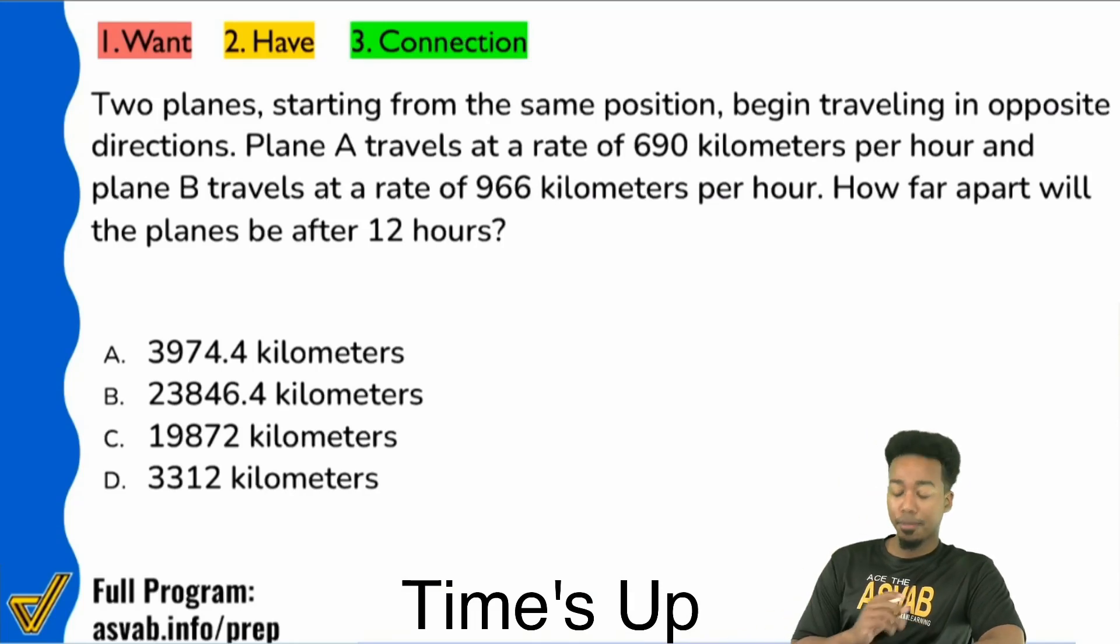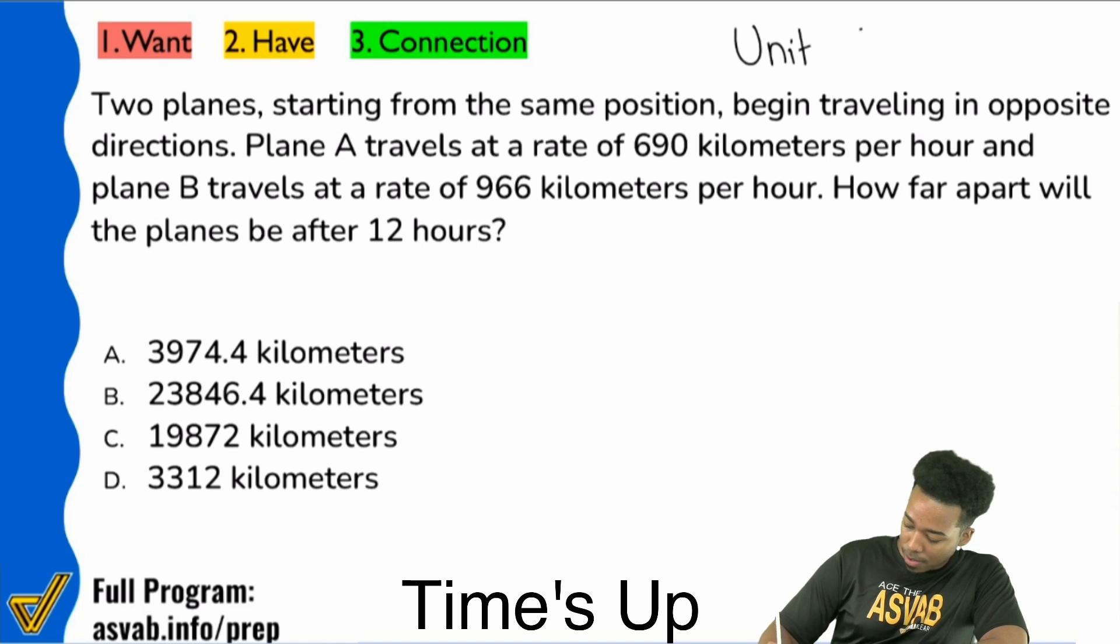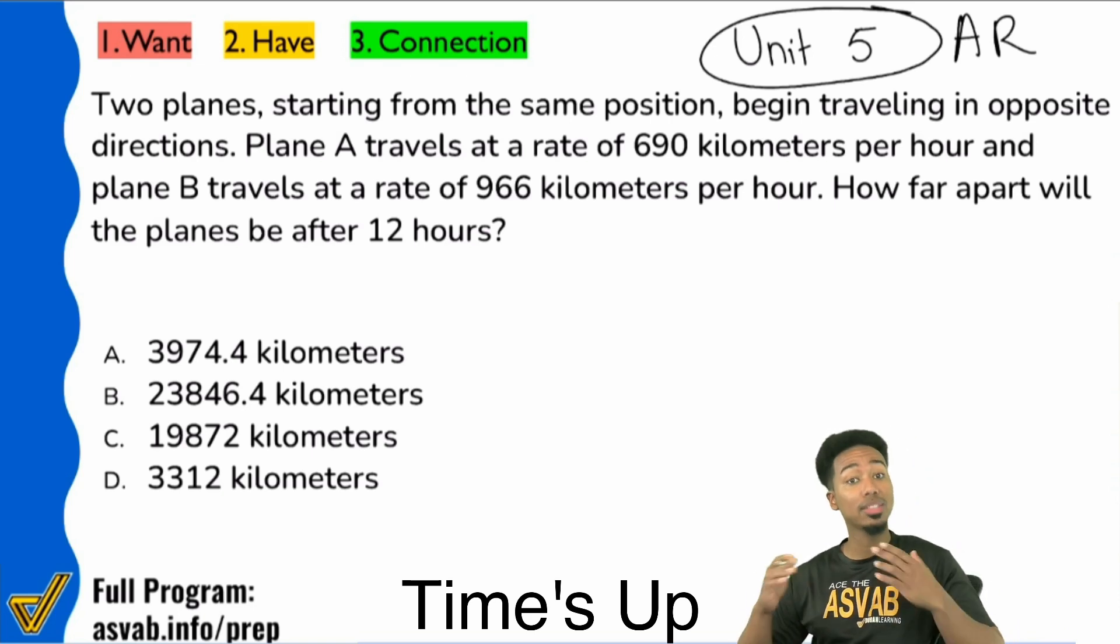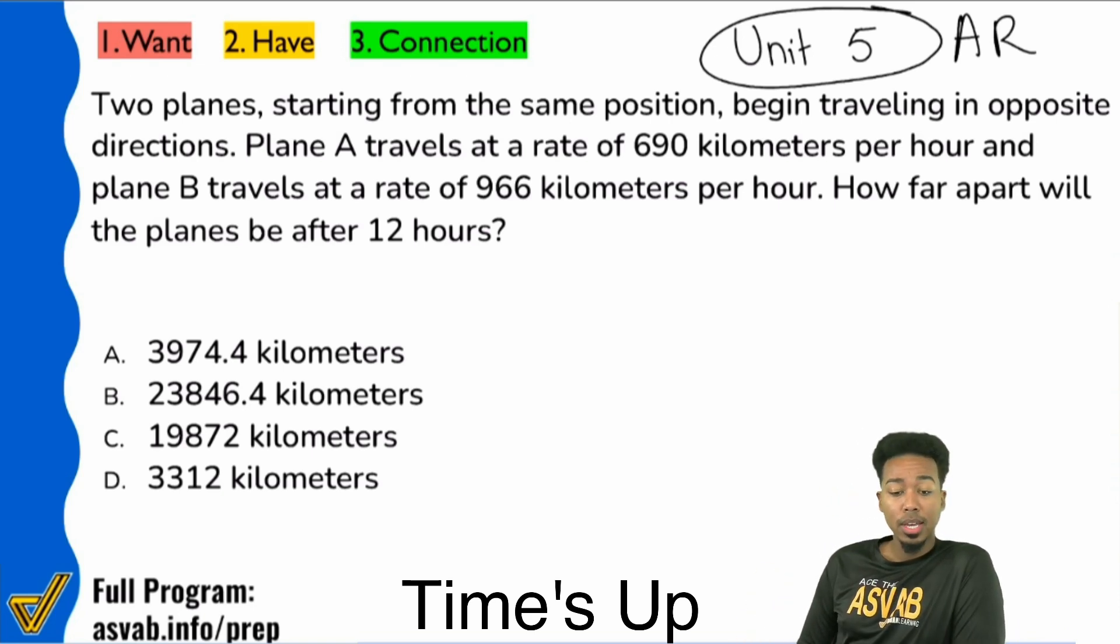Here's how we are going to get this one done. First and foremost, this is going to be found in unit five. This is unit five of the arithmetic reasoning course. So let me write that down. Everybody, unit five, or this question itself, is what type of question? How would you categorize this?